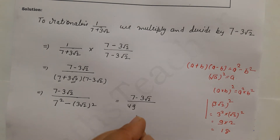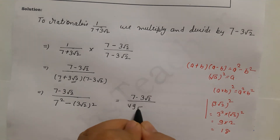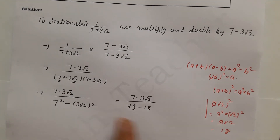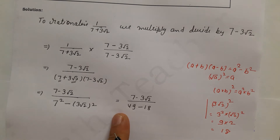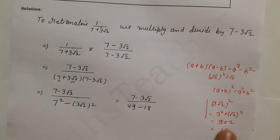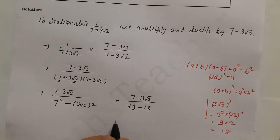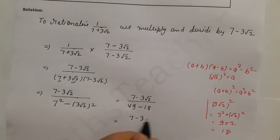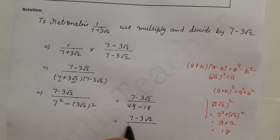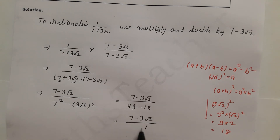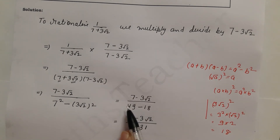So the denominator is 49 minus 18. Subtracting gives us 31. Therefore the rationalized form of 1 upon 7 plus 3 root 2 is 7 minus 3 root 2 all over 31.